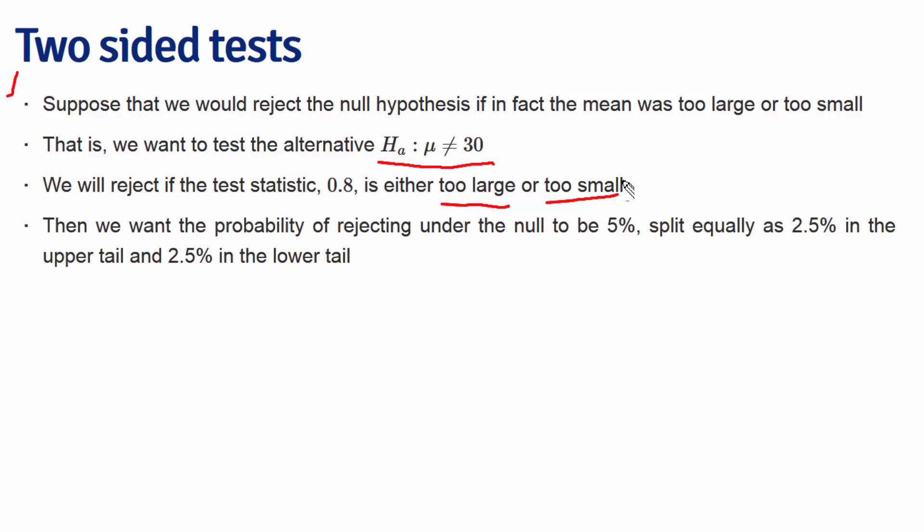What does change, however, is in order to get that 5% in a way that allows our test statistic to be too large or too small, we need to split the probability as 2.5% in either tail of the distribution, be it the t-distribution for small sample sizes or the z-distribution for large sample sizes.